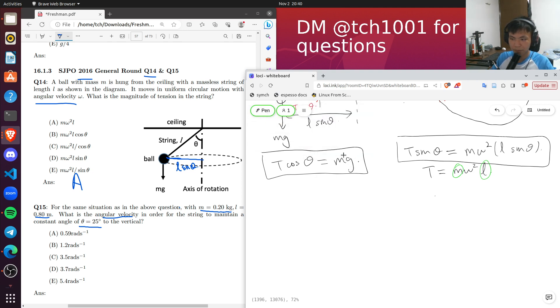And so the other equation will come from this side, where we have theta. So we have cosine theta, we have m, and we have g. So we can find T, and after we find T, we can find omega.